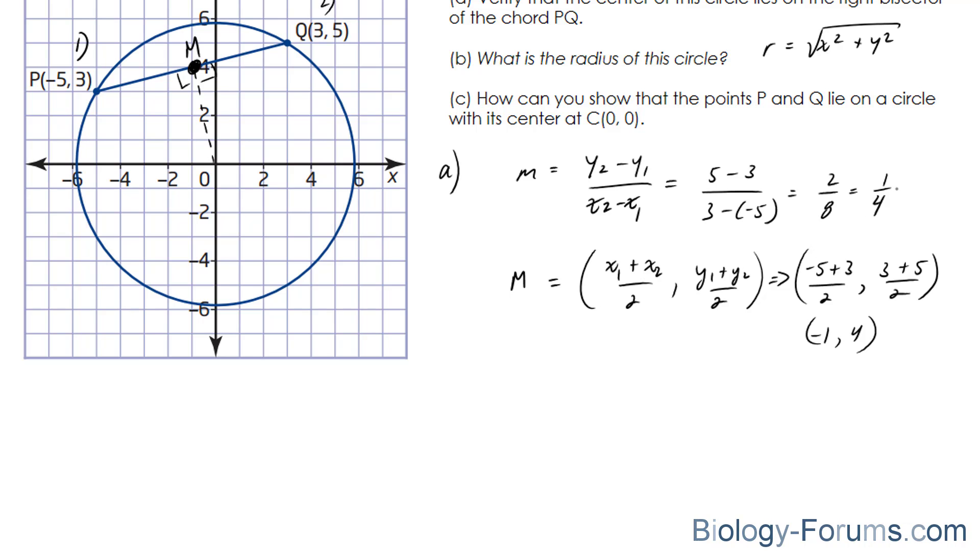The slope we found for P and Q was 1 over 4. We're going to flip the 4 and the 1 and negate the term. And we end up with negative 4. So the slope of this line will be negative 4. And let's start off by creating an equation for a line. y is equal to mx plus b.